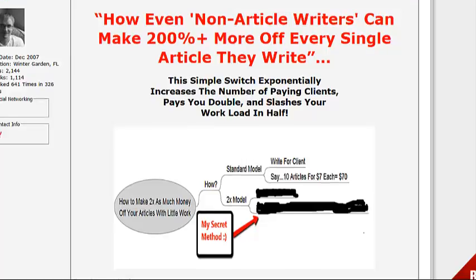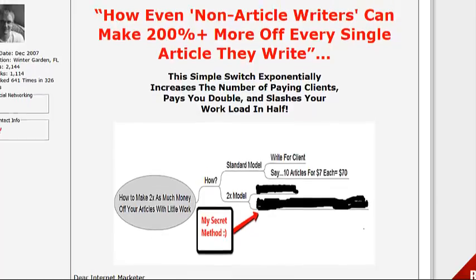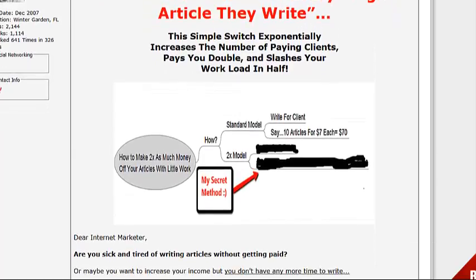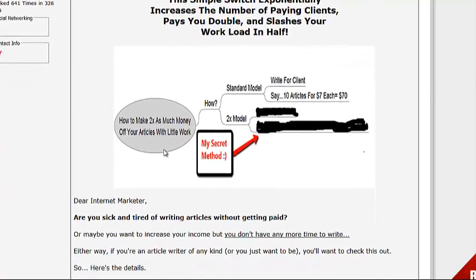Even if you're not an article writer, you can definitely take advantage of this. This simple switch exponentially increases the number of paying clients, pays you double, and slashes your workload in half. As you can see in the graphic here, how to make two times as much money off your articles with little work — the substandard model is 10 articles at seven dollars, which is 70 bucks. This is the two times model, the secret method, which is blacked out here so you can't see what it is yet.